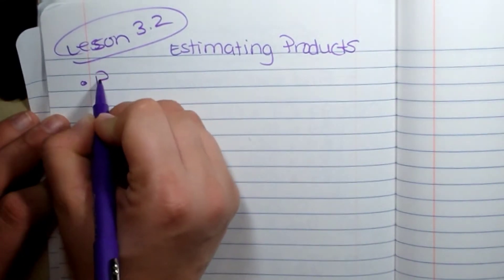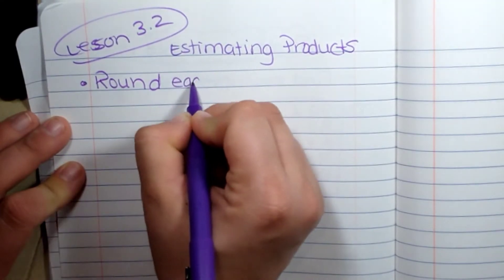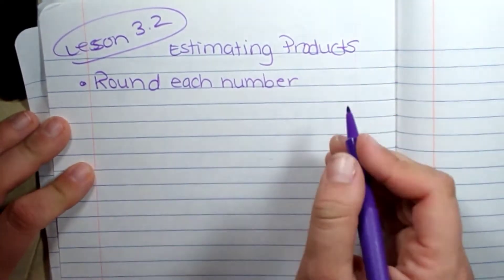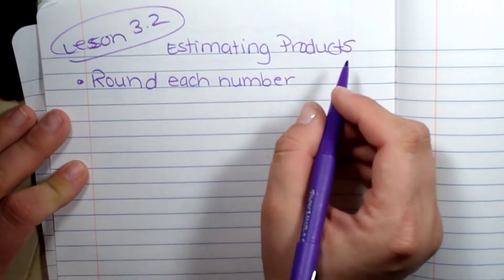We're going to round each number to the highest place value. So for example, if it's 462, I'm going to round it to the hundreds place because that's my largest place value.